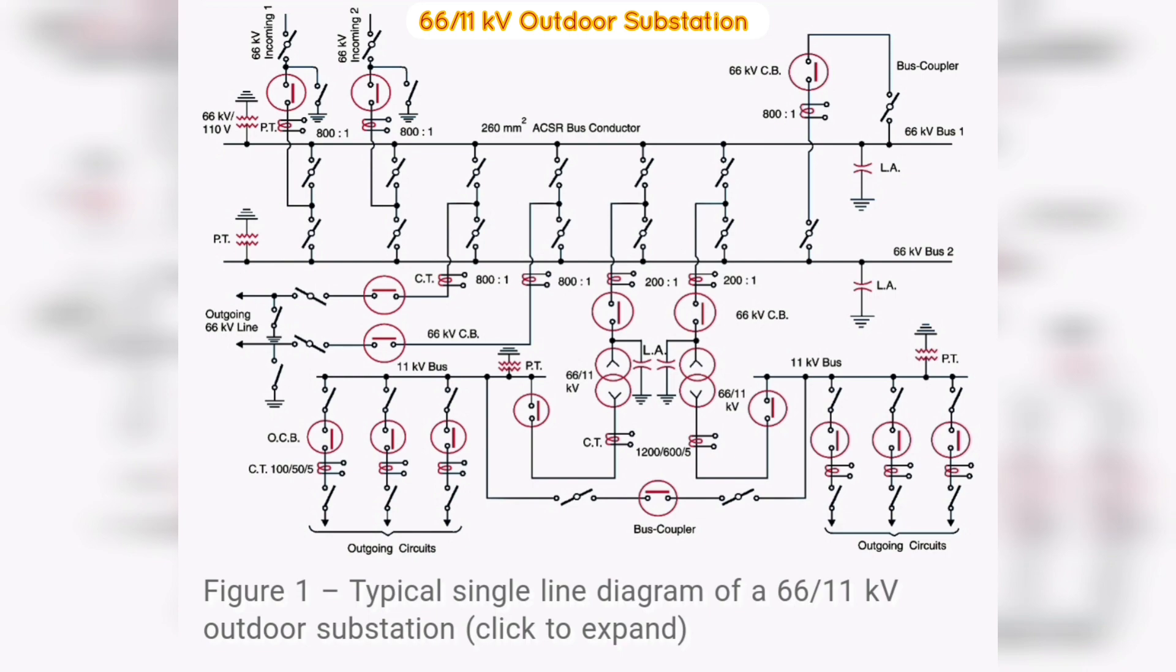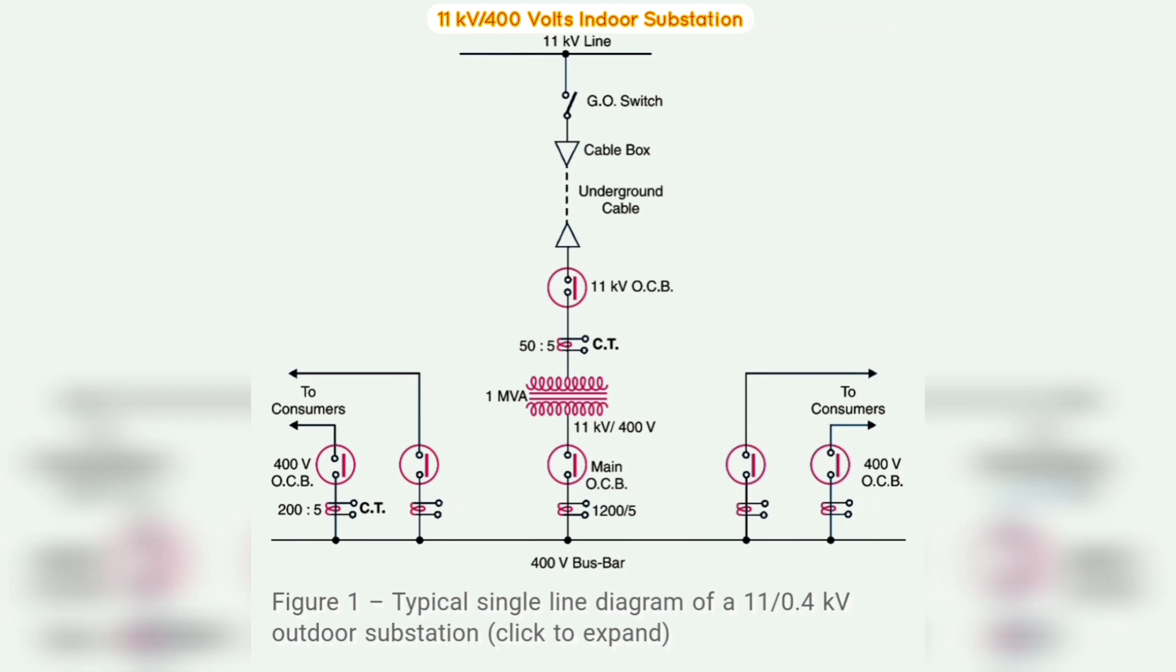Next, we learn about the 11 kV/400 volt indoor substation single line diagram. Figure 2 shows the single line diagram of a typical 11 kV/400 volt indoor substation. Let's explain this scheme a little bit.